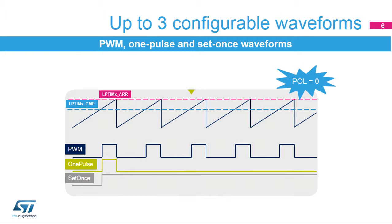The LP-TIM-CMP and LP-TIM-ARR registers, in conjunction with the WAVE bitfield from the LP-TIM-CFGR register and SNG-STRT from the LP-TIM-CR register, are used to control the output waveform. The output waveform is either a typical PWM signal with its period and duty cycle controlled by the LP-TIM-ARR and LP-TIM-CMP registers respectively, or it is a single pulse with the last output state defined by the configured waveform. If the last output state is the same as the one at the waveform's beginning, then one pulse mode is configured; if not, then set once mode is configured. The output polarity is controlled through the WAV-POL bit field in the LP-TIM-CFGR register.